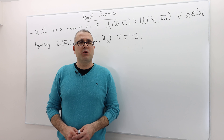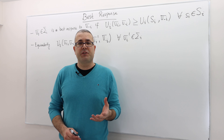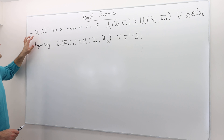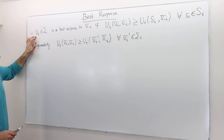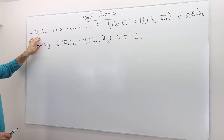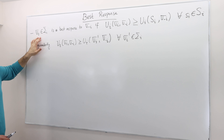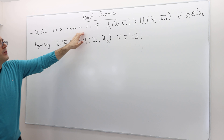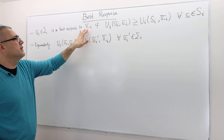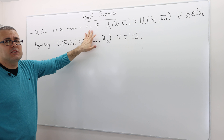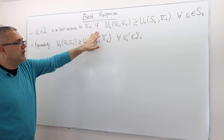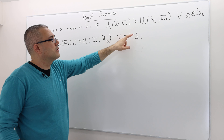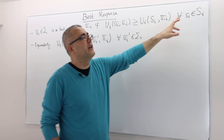In this episode, we're going to talk about best response. Let's start with the definition. A mixed strategy of player i, sigma_i, is the best response to his opponent's strategy, sigma_{-i}, if the following inequality holds for every s_i.